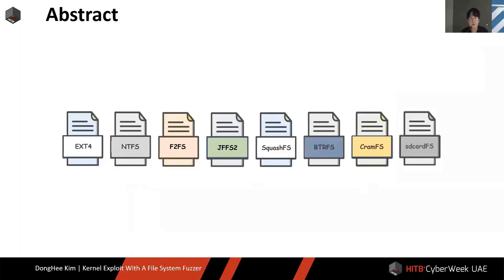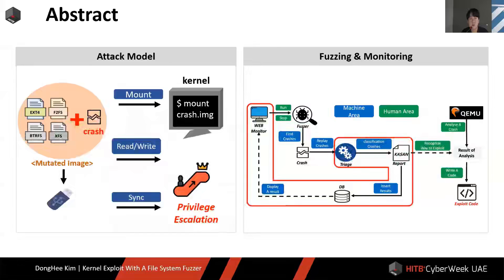There are various file systems in the world. However, there are few cases of attacks through the file system, because it is a weak threat model. At this point, you might say: isn't it already root privilege to mount the image? However, if you put it in a USB and plug it into a PC, it becomes automatic without any need for root privilege. If the crafted image is mounted, kernel panic can occur. In this way, there was an attack model through USB, and we used Janus.